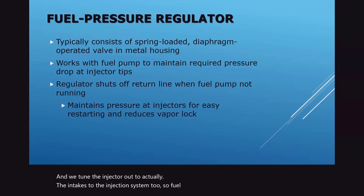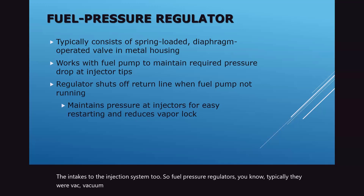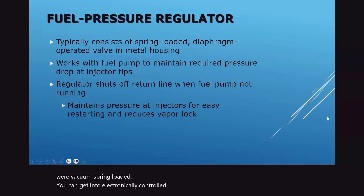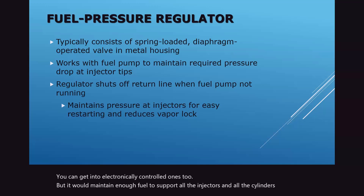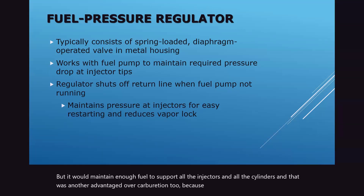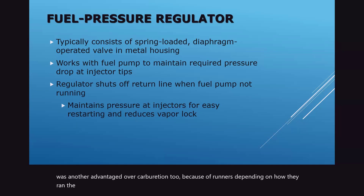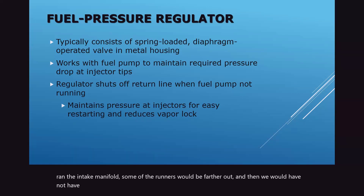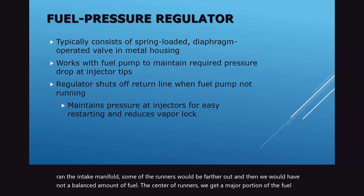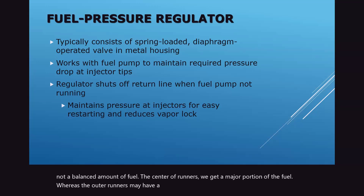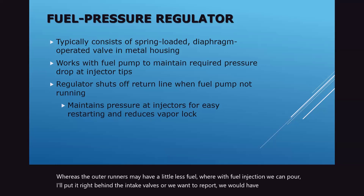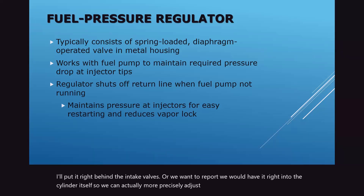Fuel pressure regulators were typically vacuum spring-loaded, though we can get into electronically controlled ones too. They would maintain enough fuel pressure to support all the injectors and all the cylinders. That was another advantage over carburetion — with carburetors, center runners would get a major portion of the fuel while outer runners might get less. With fuel injection we can put it right behind the intake valves or directly into the cylinder and more precisely adjust how much fuel goes to each cylinder.